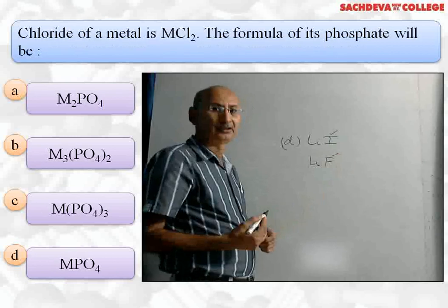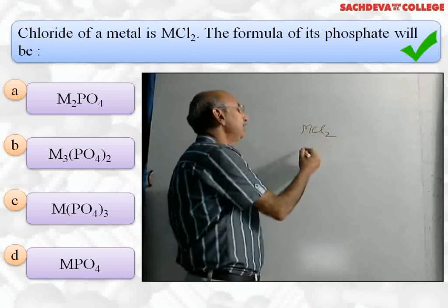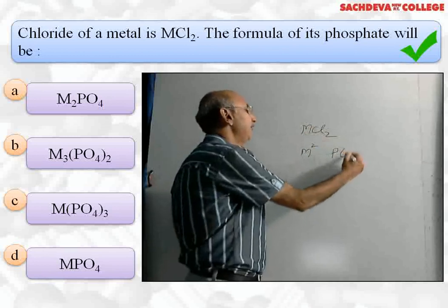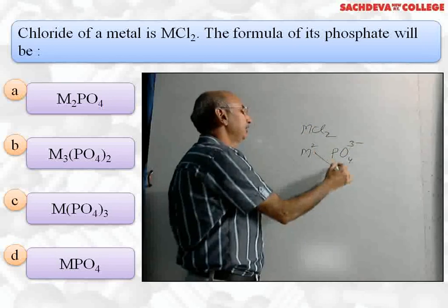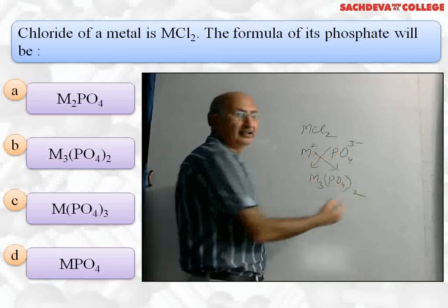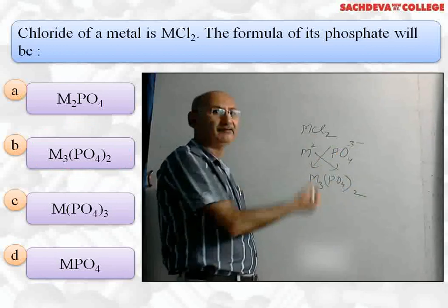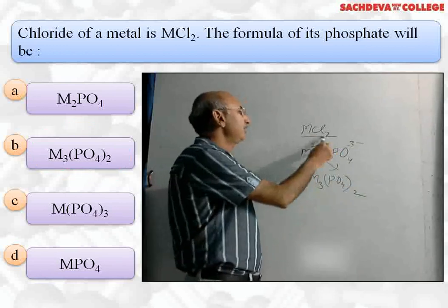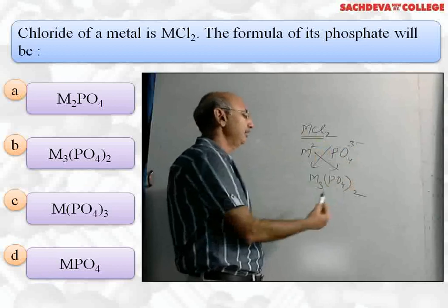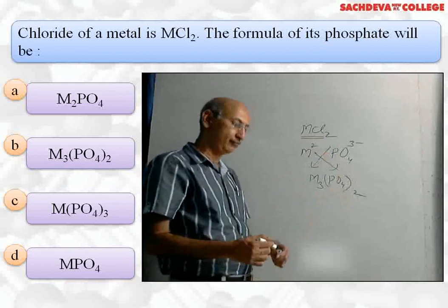Next question: the chloride of a metal is MCl₂. Since MCl₂ means the valency of the metal is two, we need to find the formula of its phosphate. Phosphate is PO₄³⁻, so the formula of the metal phosphate will be M₃(PO₄)₂. The correct answer is (b) M₃(PO₄)₂. The valency of M is two and phosphate is three minus, so three comes to the metal side and two comes to the phosphate side.